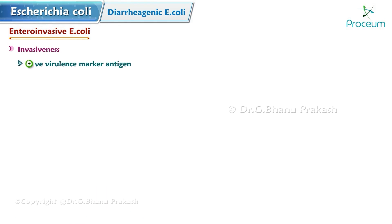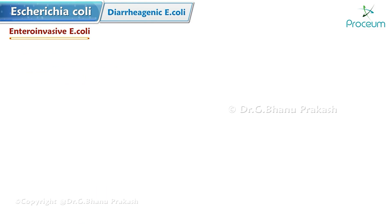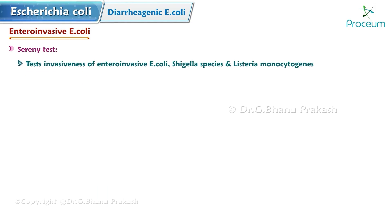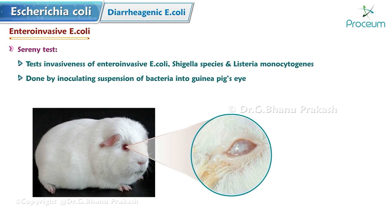EIEC causes dysentery — inflammatory, bloody diarrhea. Its invasiveness is due to virulent marker antigen, and it is also Sereny test positive. The Sereny test is used to test the invasiveness of EIEC, Shigella species, and Listeria monocytogenes. It is performed by inoculating a bacterial suspension into a guinea pig's eye; severe mucopurulent conjunctivitis and keratitis indicate a positive result.